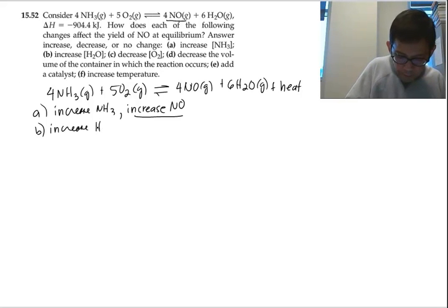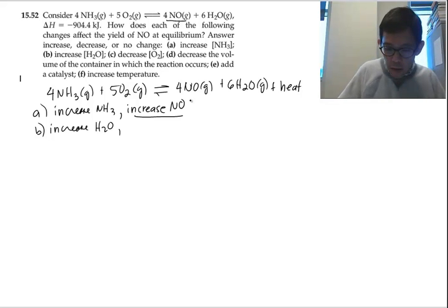Part B. Increase H2O. H2O is on the right side of the equation. When you increase H2O, it shifts left to get rid of the excess H2O. So when you shift left, the amount of NO decreases. Decrease NO.